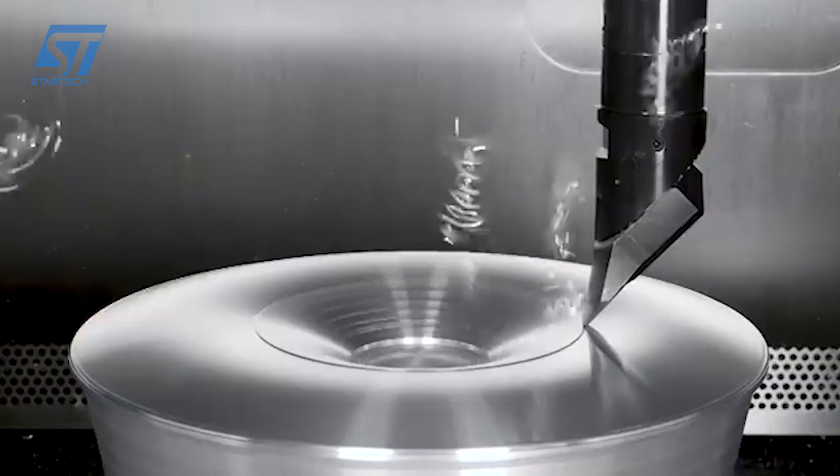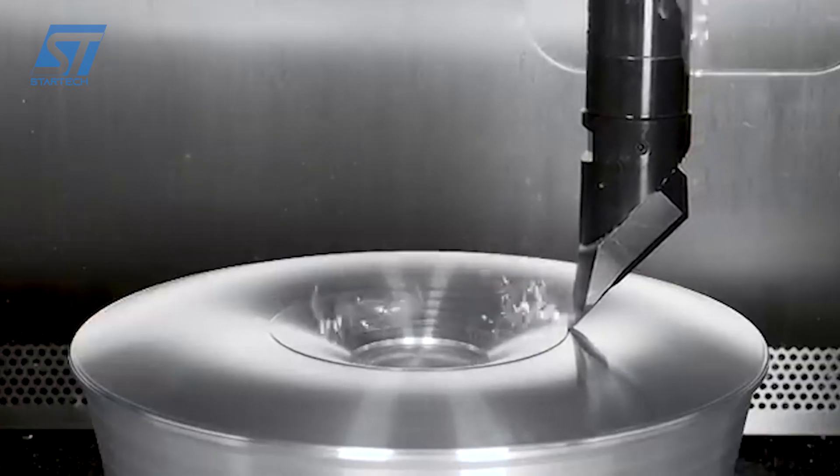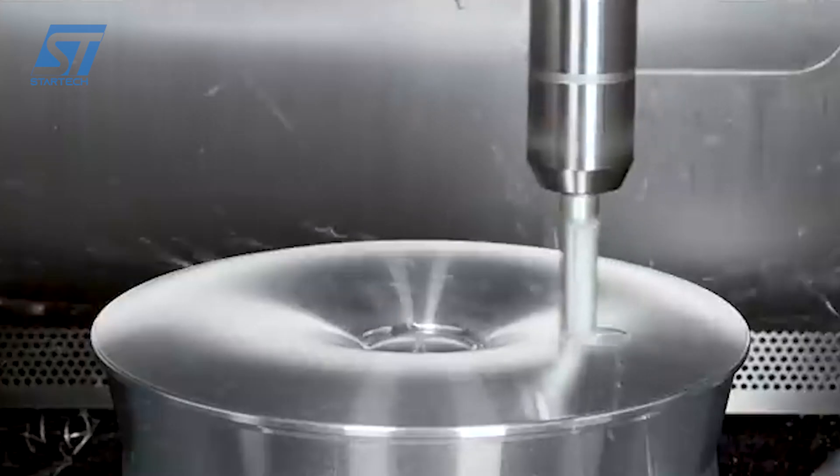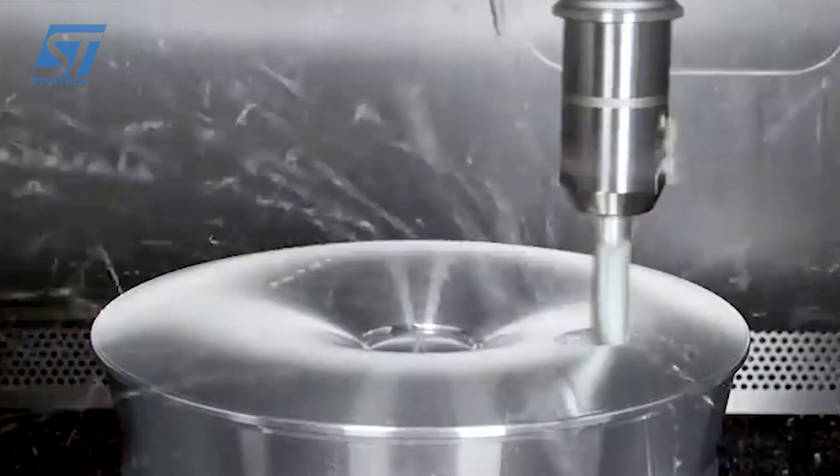A raw aluminum blank is mounted on a CNC lathe. SolidCam directs the cutting tools to remove large amounts of material, creating the basic shape of the rim.